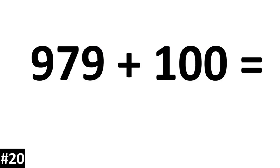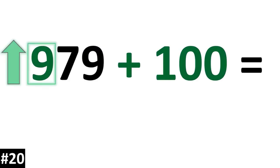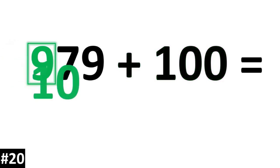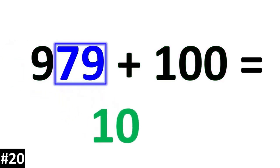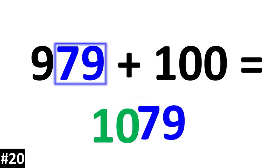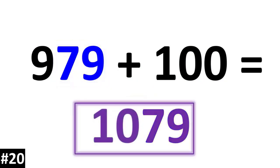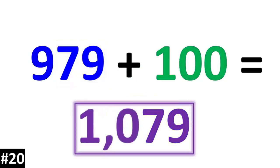979 plus 100. 979 has a hundreds digit of 9. If we add another 100, then 9 becomes a 10. The other numbers stay the same, so we have 1,079.